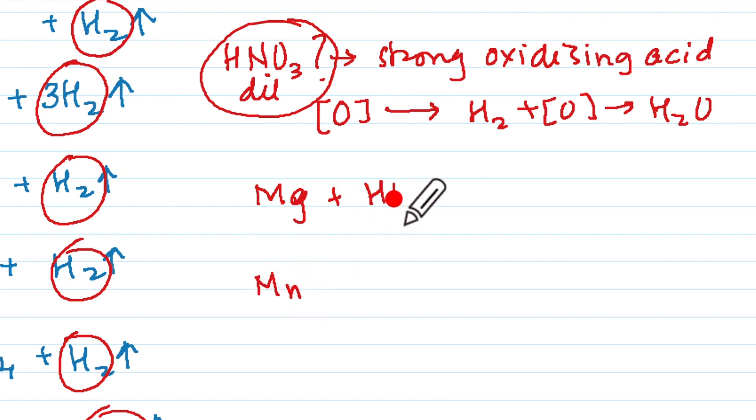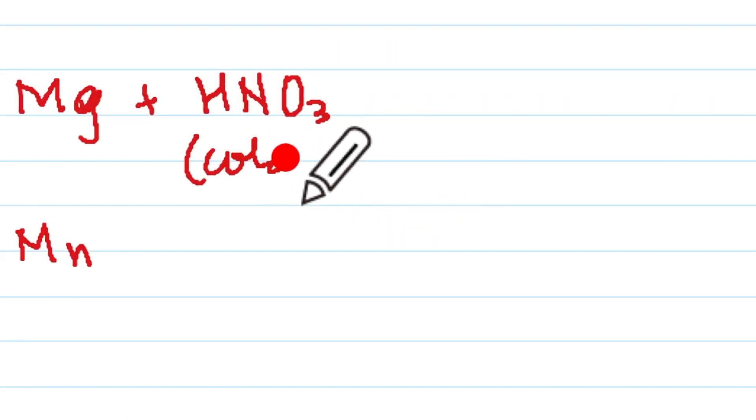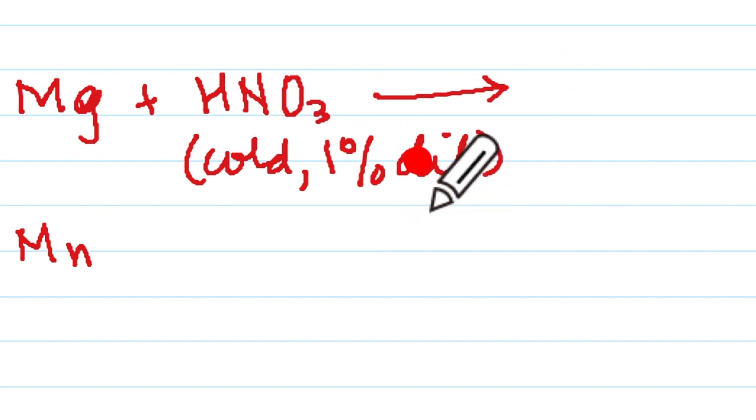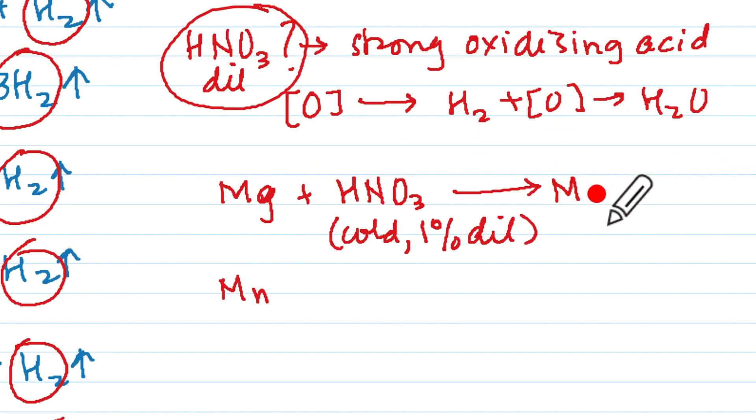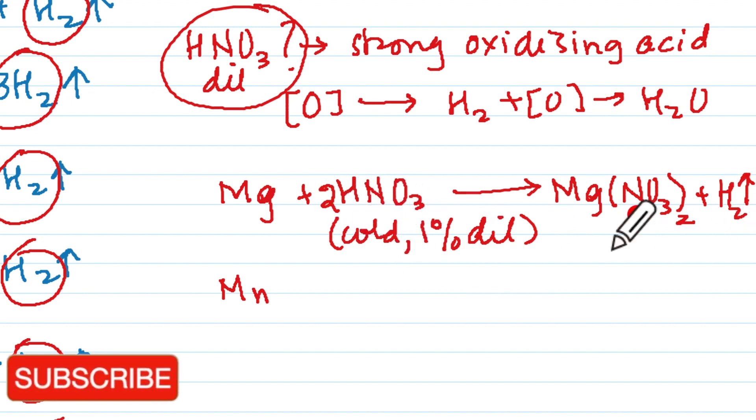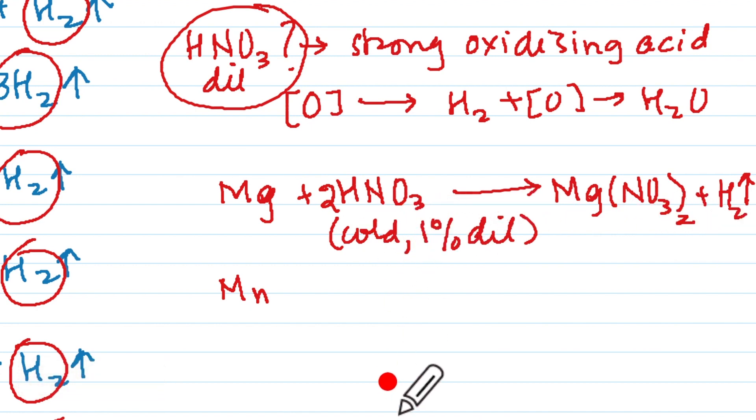Mg reacts with HNO3 but we need it as cold and 1% dilute. Only in that condition Mg will take NO3, so we will get Mg(NO3)2 and plus it will liberate hydrogen. So hydrogen is 2 here so H and H is balanced, NO3 are twice so this is well balanced.